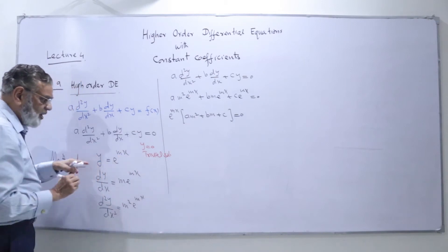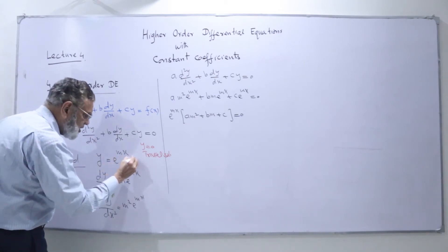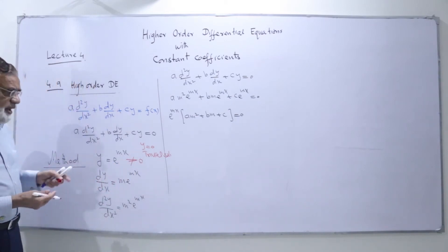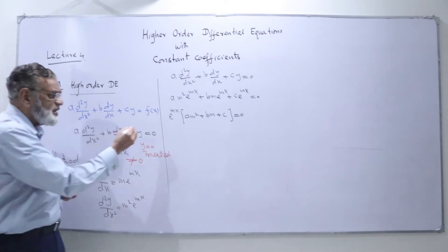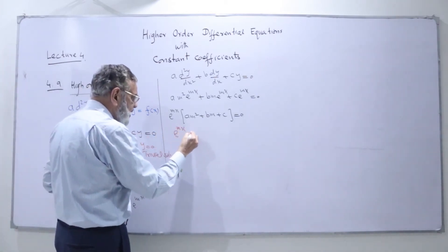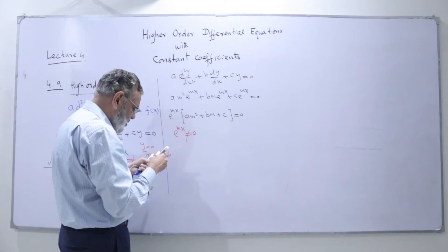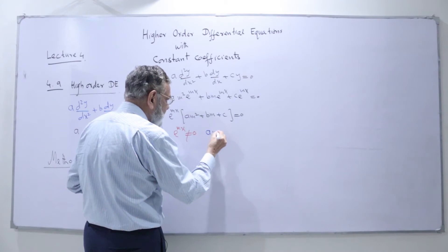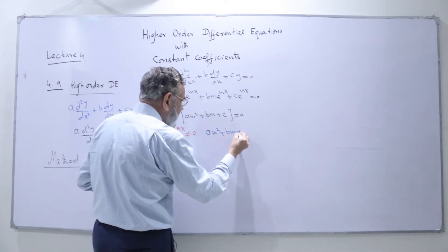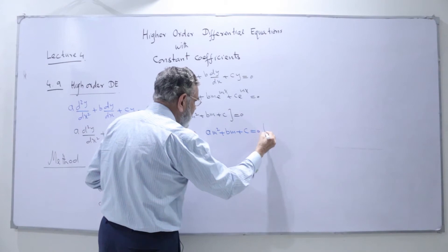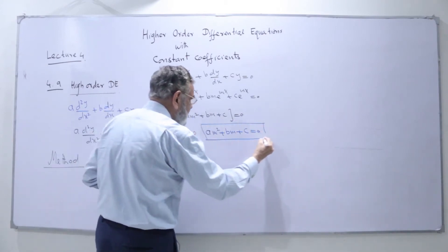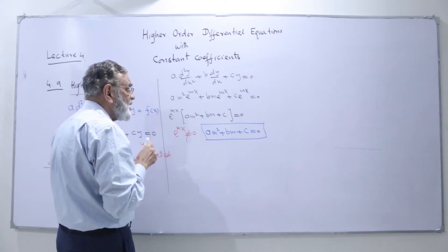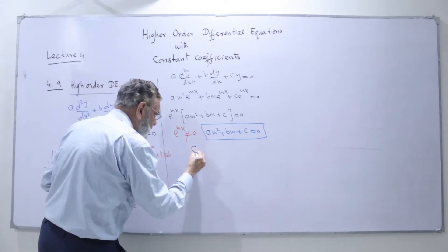When we want to find a non-trivial solution, e^(mx) must not equal zero. Since e^(mx) ≠ 0, we are left with a·m² + b·m + c = 0. This is a quadratic equation, and we call it the characteristic equation. It is related to our differential equation, and we call it the characteristic equation.